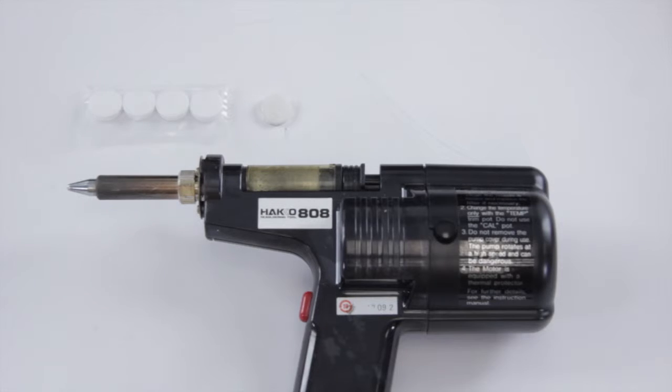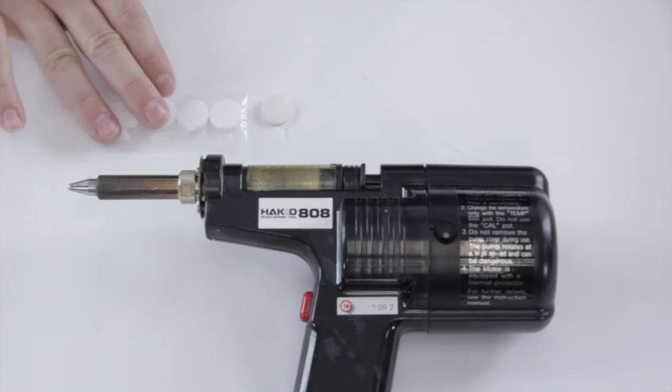In today's video, we're going to show you how to replace the ceramic filter in the Hakko 808 desolder gun. You're going to need to do this every once in a while after the filter clogs. You'll notice the vacuum stops working as efficiently.